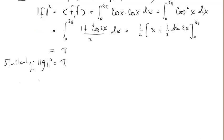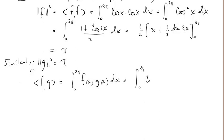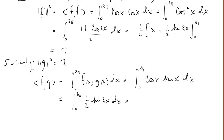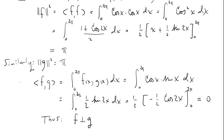Now let's look at the inner product of f and g: the integral from 0 to 2π of cos x times sin x dx. This integral ends up giving us zero. Thus f is orthogonal to g.